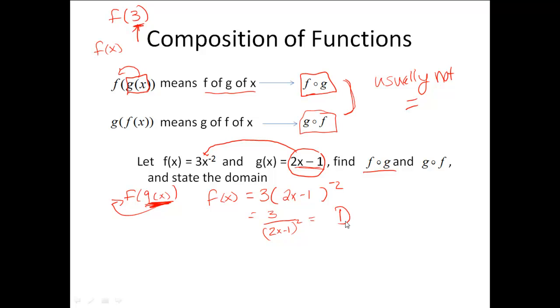I need to also state my domain now for this. Well, when I'm looking at my domain, I definitely have a division problem going on here. So I've got to ask myself, what would cause this denominator to be 0? Well, I need to set the denominator equal to 0 in order to figure that out, because I need to find those bad numbers.